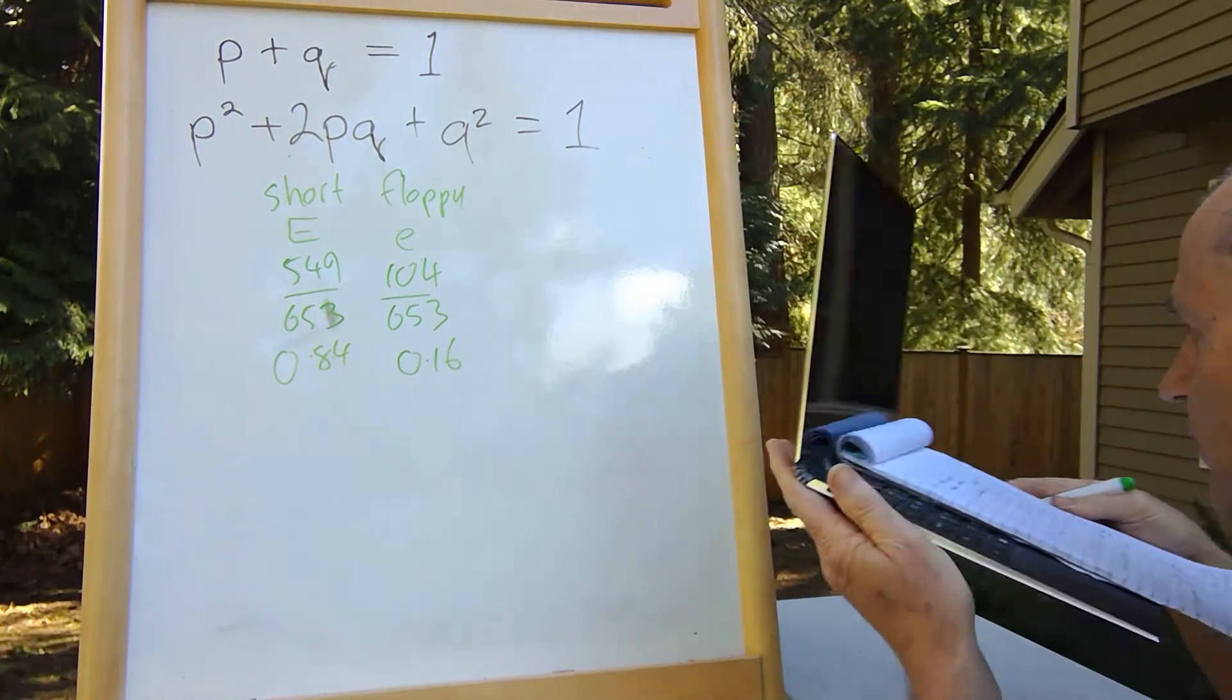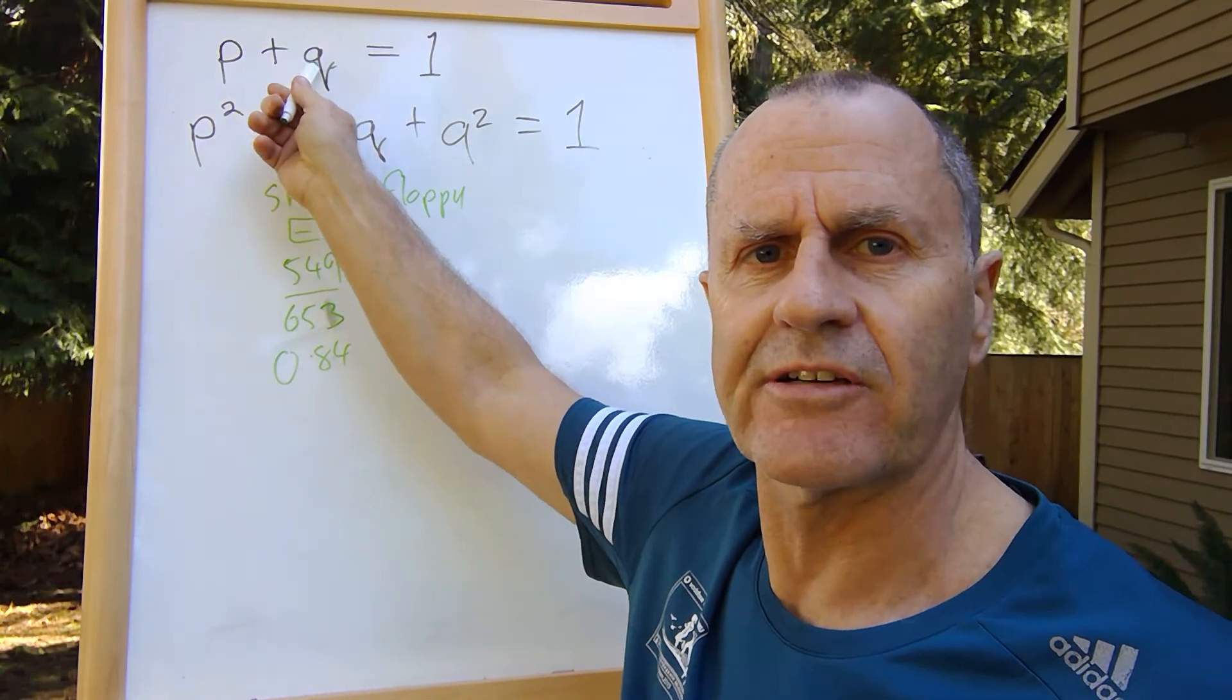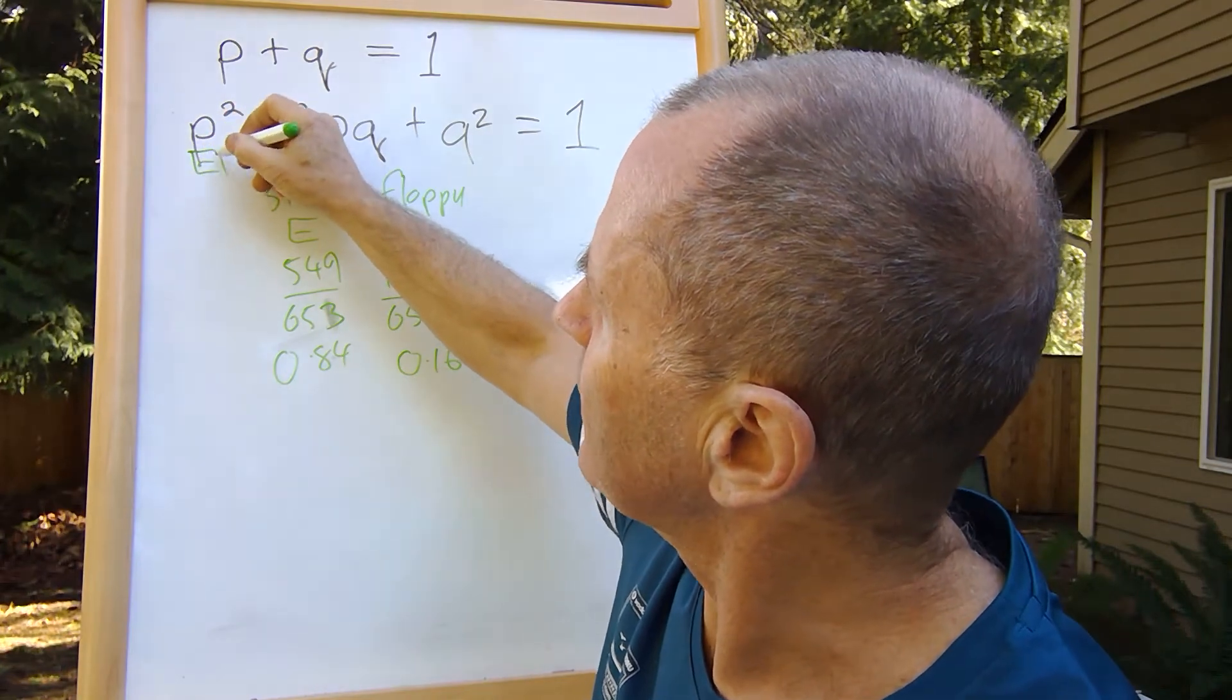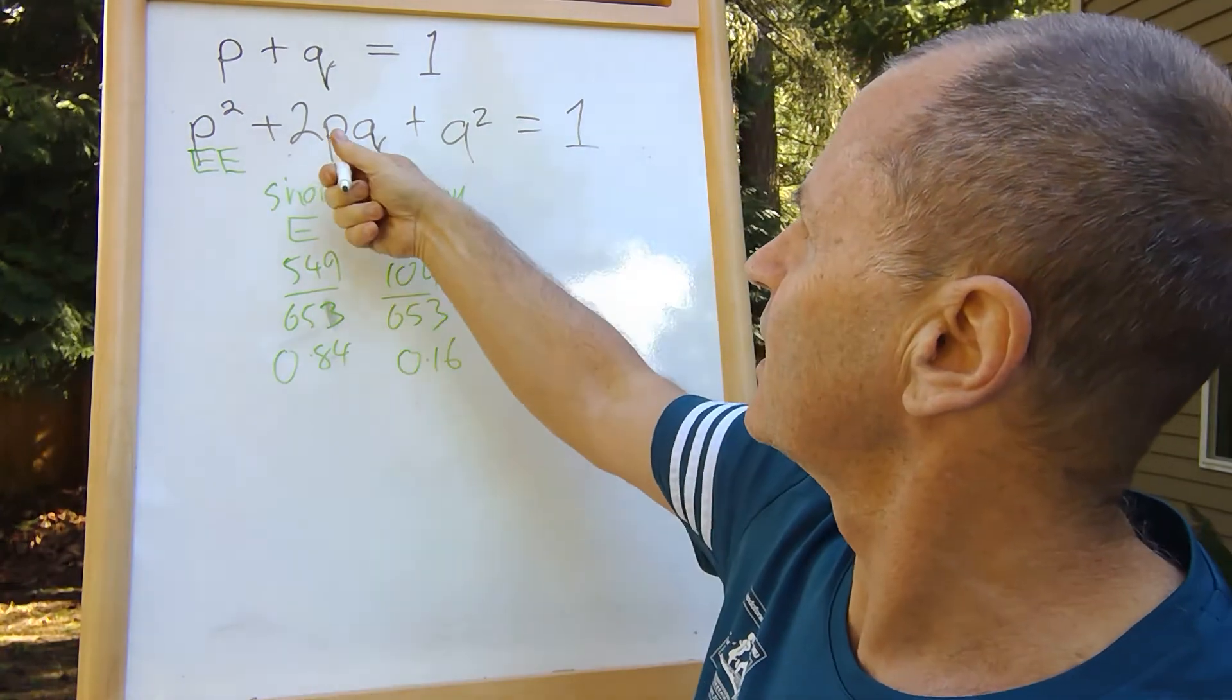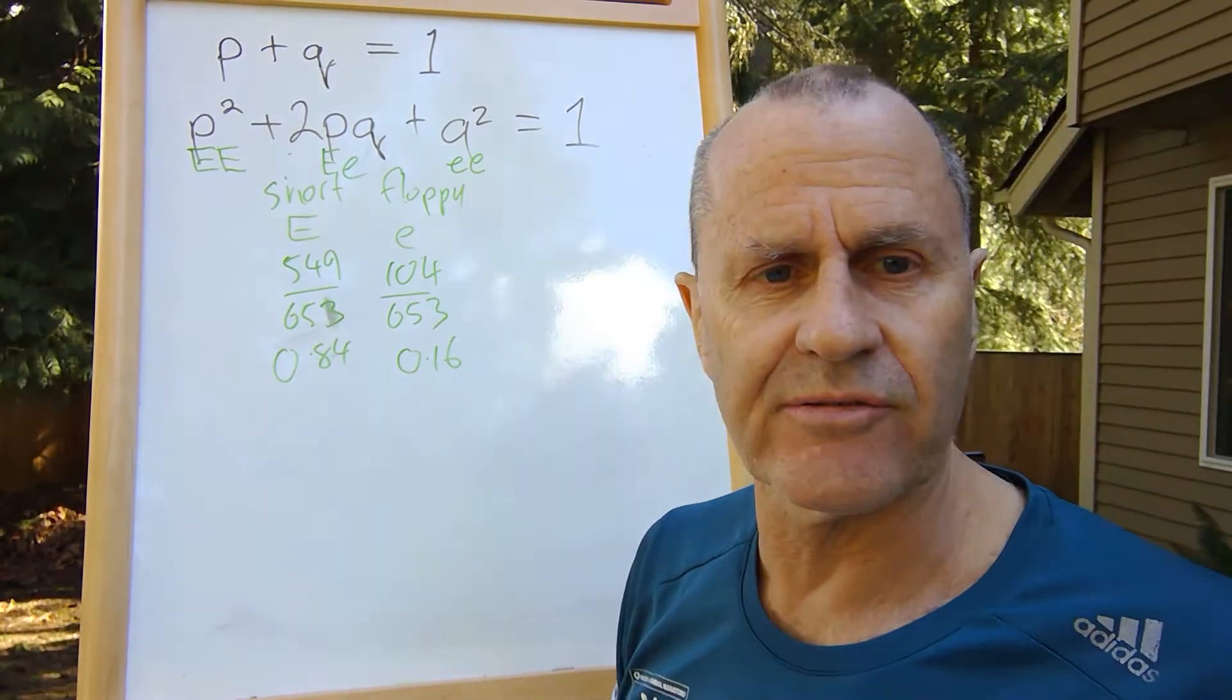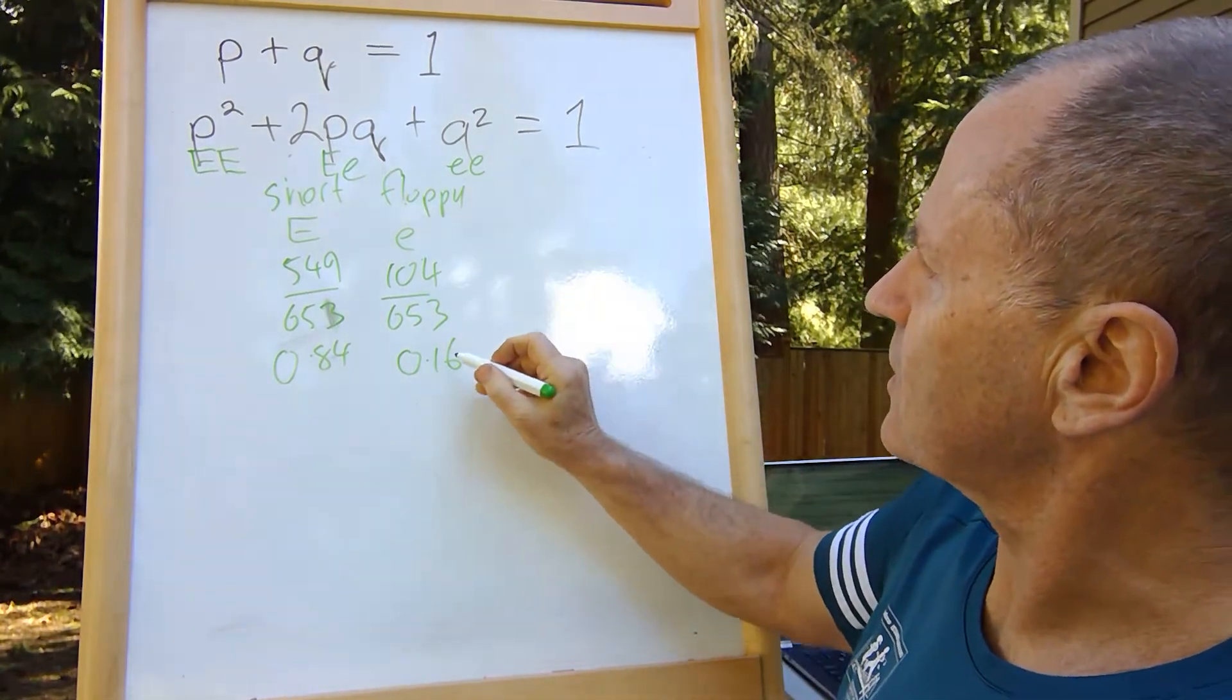Then we have to work out all the details, such as the frequencies of the dominant allele p and the recessive allele q. Remember, p² is the frequency of homozygous dominant individuals, 2pq is the frequency of heterozygous, and q² is the frequency of homozygous recessive.